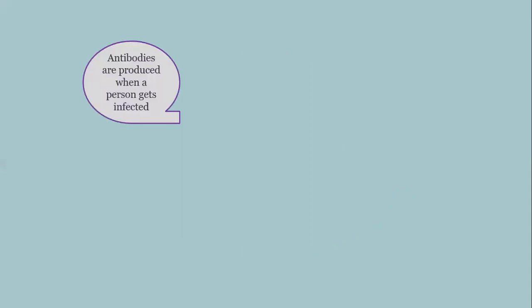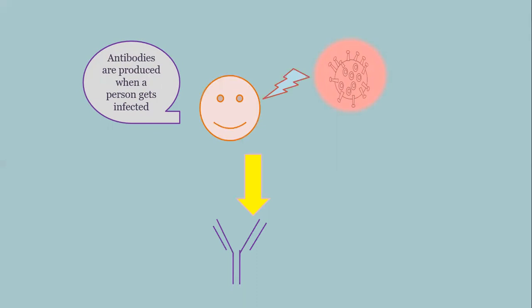Now we will discuss when antibodies are produced. Antibodies are produced within a person if they get infected by the virus. Suppose a human being gets infected by coronavirus — antibodies will be produced against this virus. The question is which part of the virus would be used for producing antibodies, and if a future encounter happens, which part would be recognized and neutralized using those antibodies.